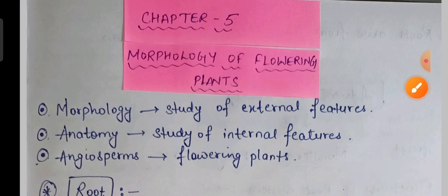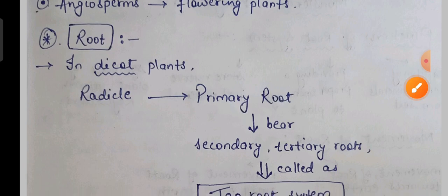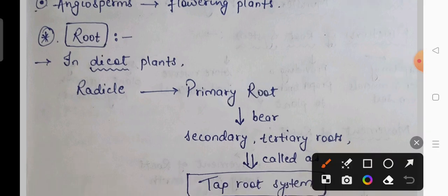Now we will start with the root. Basically, the root is called the radicle and it arises from the seed — it comes from the embryonal axis.